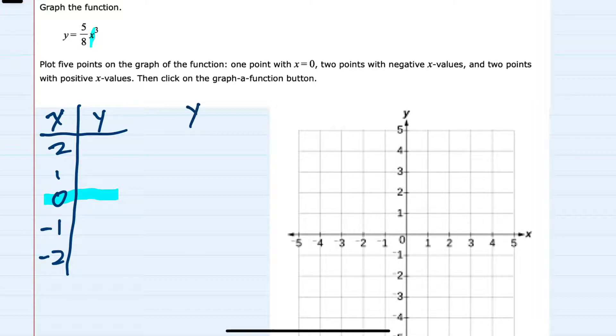We have y equals 5 eighths times 0 cubed, and since 0 cubed is 0, 5 eighths times 0 is just 0. So we have found our first point.